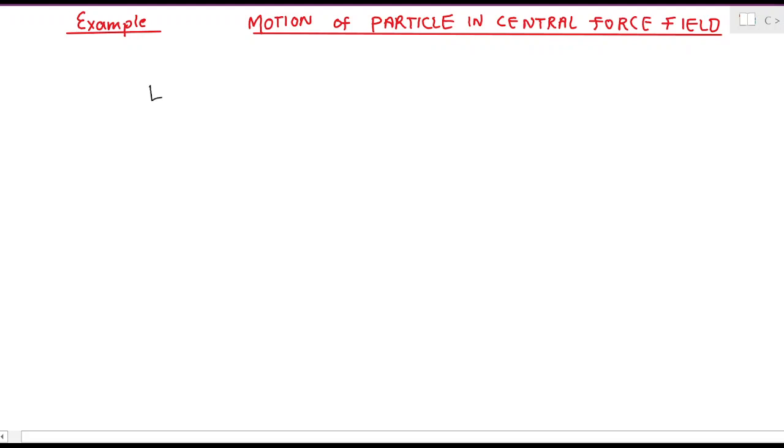As you know, the Lagrangian is given as L = T - V, kinetic energy minus potential energy. Here we will use polar coordinates because that will be easier to deal with.